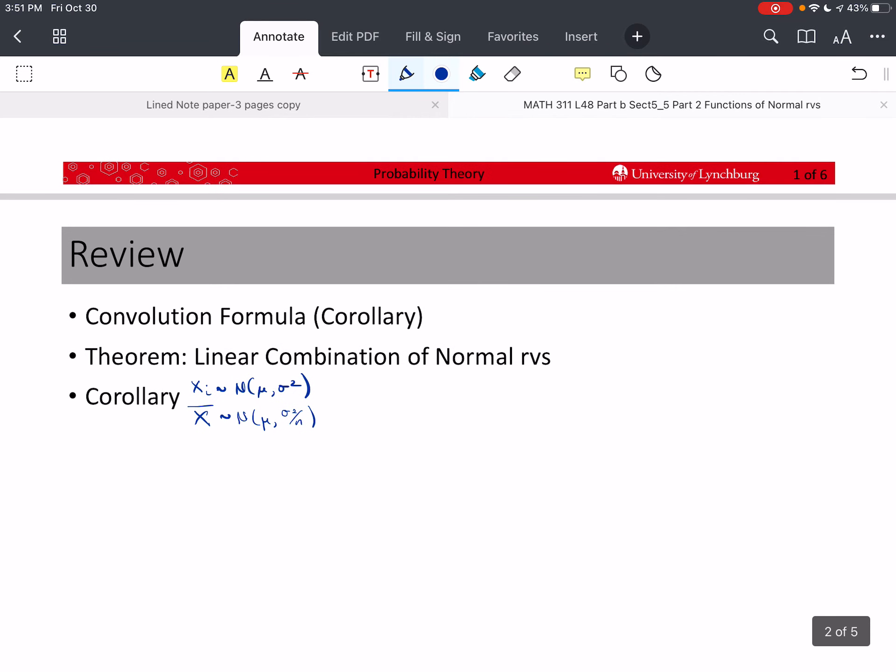In the previous video, we discussed the convolution formula, which is a corollary to the bivariate transformation theorem. We also proved a theorem about the linear combination of normal random variables, and then we did a corollary that talked about x-bar.